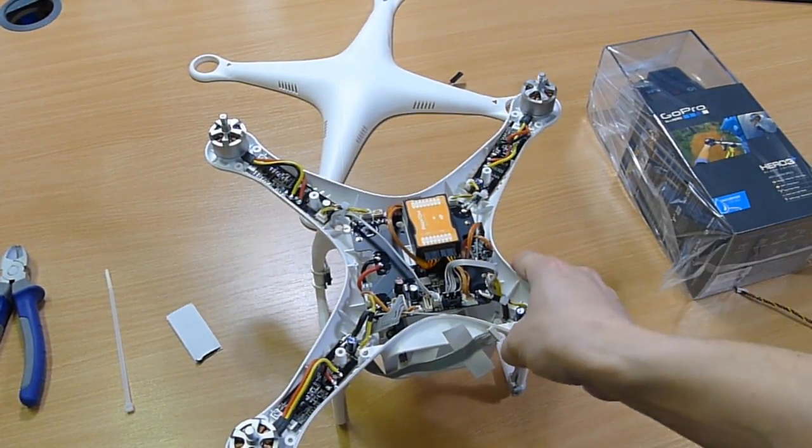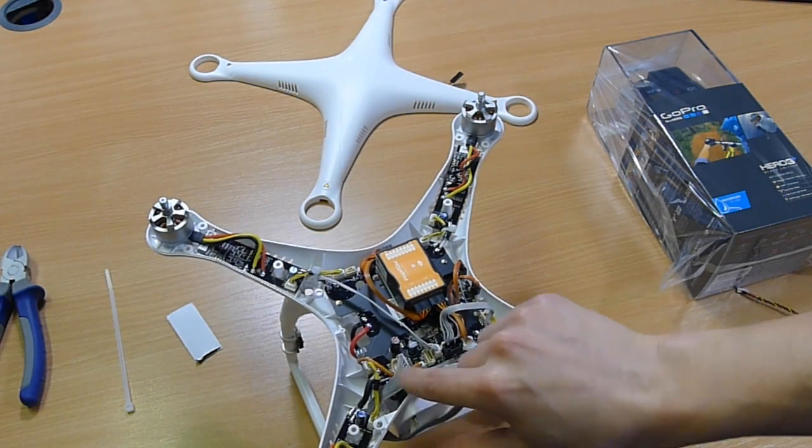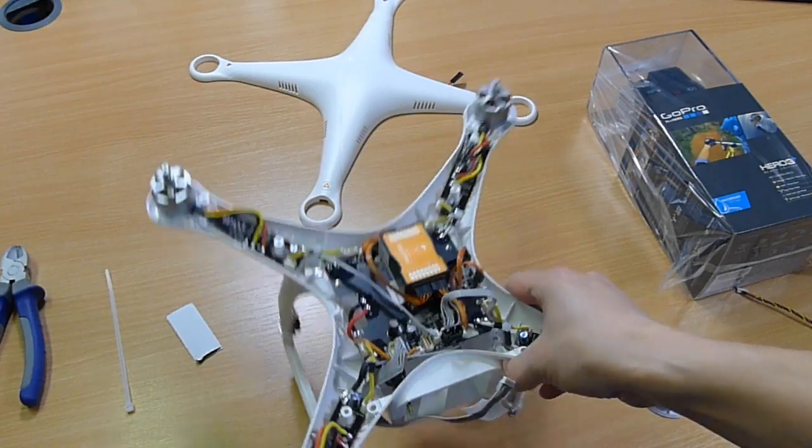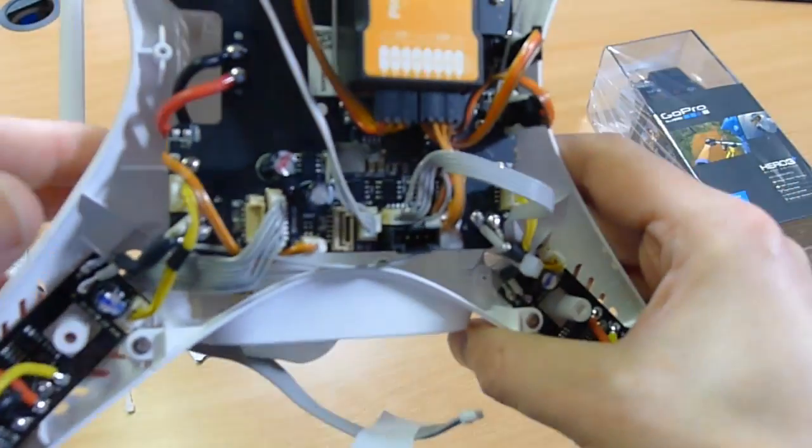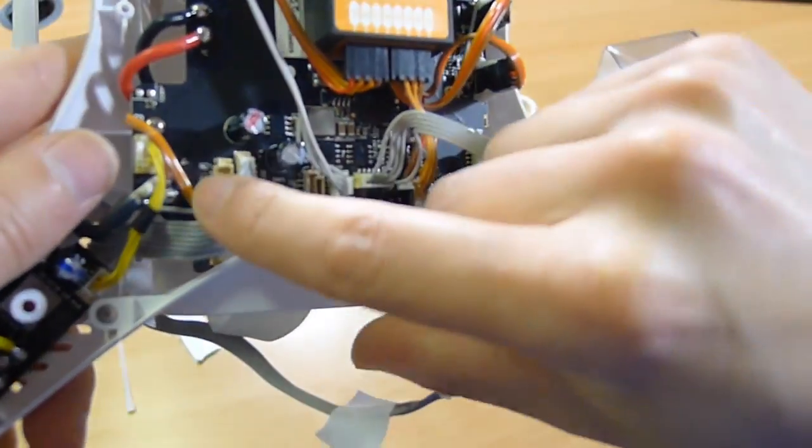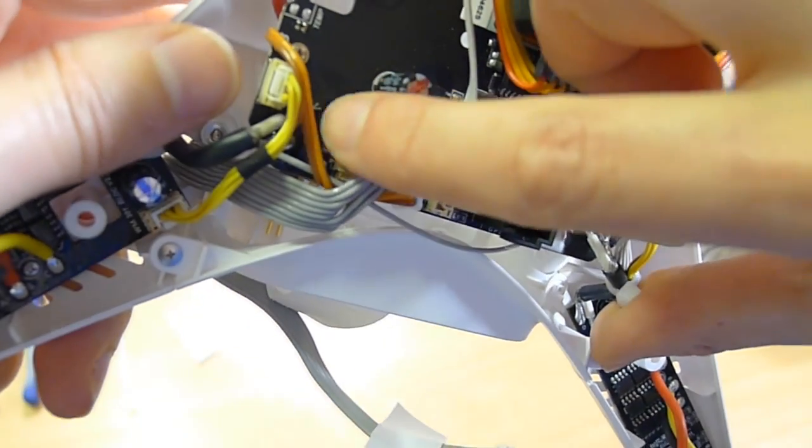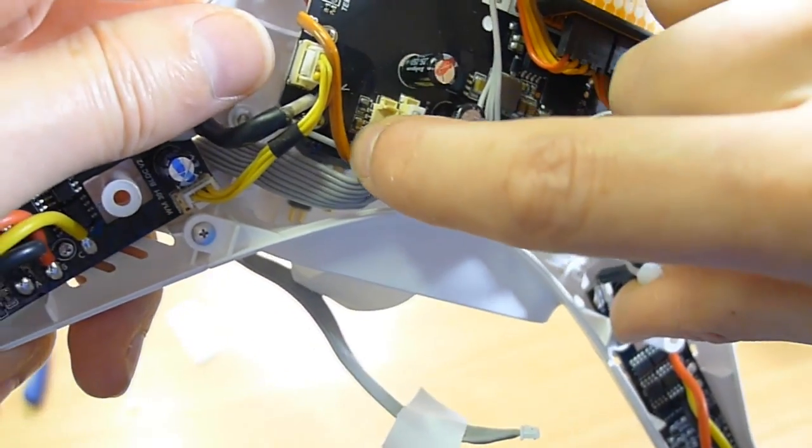So we've now got at the bottom of the board here, the Zenmuse cable, and right next to that, there's a very small connector there which says CAM. You probably won't be able to see it on the video, but it does say CAM, just there.